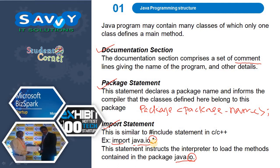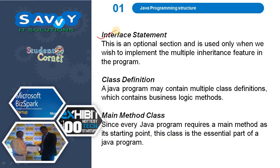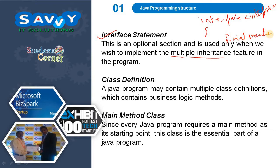If we specify a particular class or interface, then only that particular class's methods will be called. The next one is the interface section. This is an optional section and is used only when we wish to implement the multiple inheritance feature in the program. Multiple inheritance means one derived class is derived from more than one base class. An interface is defined as a collection of final members and abstract methods.